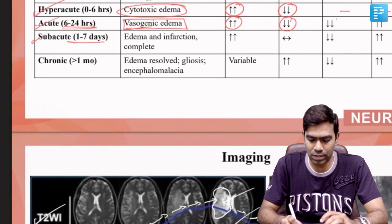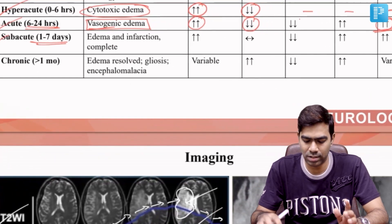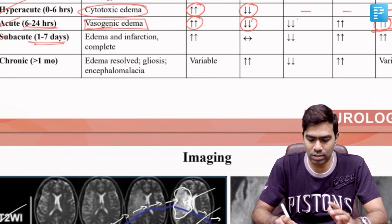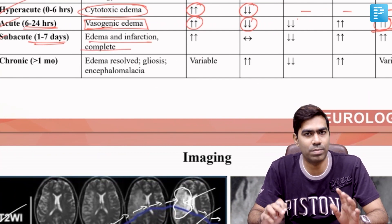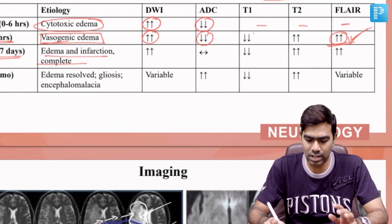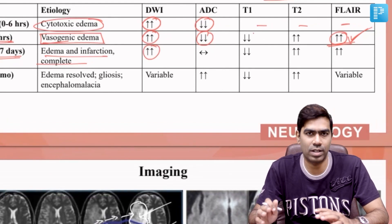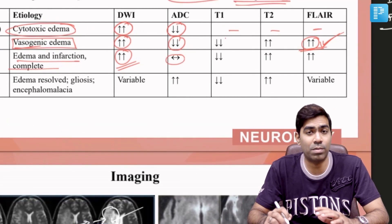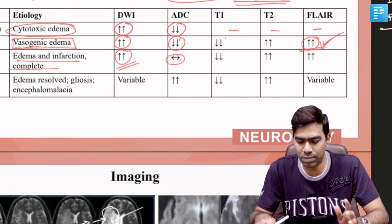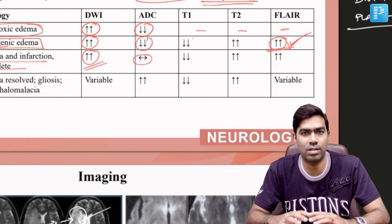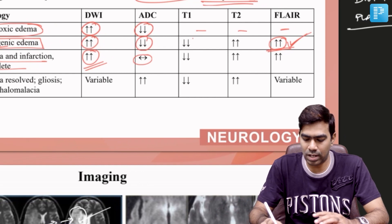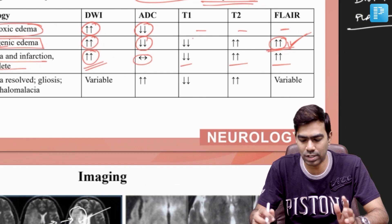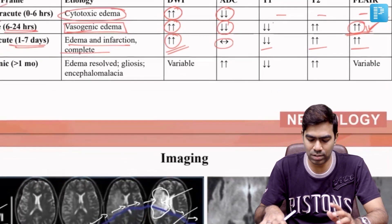In the subacute phase, lasting 1 to 7 days, the etiology of changes is edema with infarction complete at this point. DWI continues to increase and usually reaches its peak, while ADC may become completely normal by 7 days — pseudo-normalization. T1, T2, and FLAIR continue to show changes, though these are less critical at this stage.